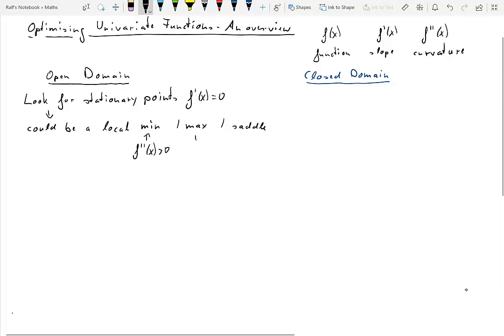So a stationary point will be a minimum if the second derivative is positive, a maximum if the second derivative is negative at that point, and a saddle point if the second derivative is equal to zero.